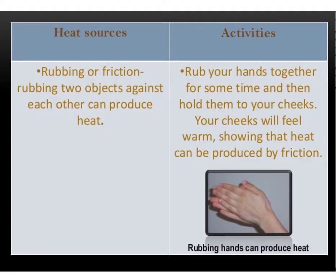Sources of Heat. Friction: Rubbing two objects against each other can produce heat. For example, rubbing your hands together for some time and then holding them to your cheeks produces heat.